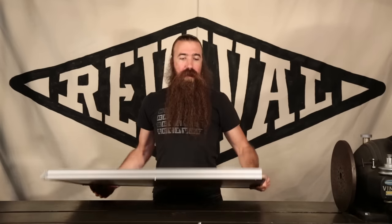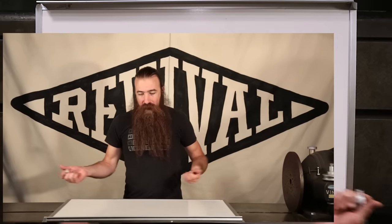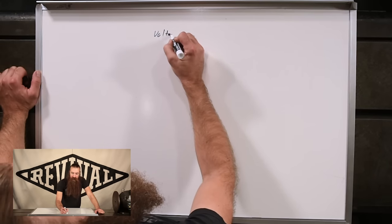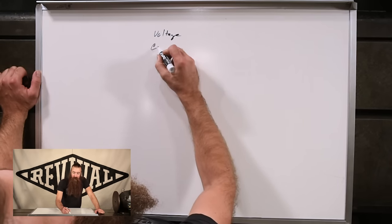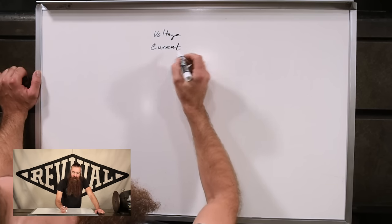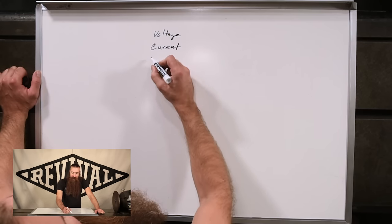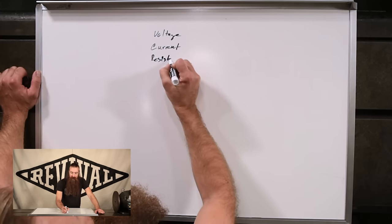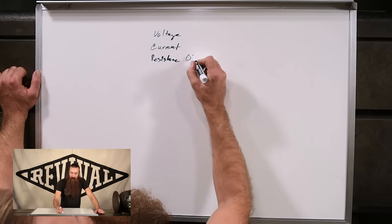We're back on a whiteboard for this one. The first thing we want to work out is what some of the vocabulary means. We've got a few variables: we've got voltage, we've got current, and we've got resistance, which is measured in ohms.